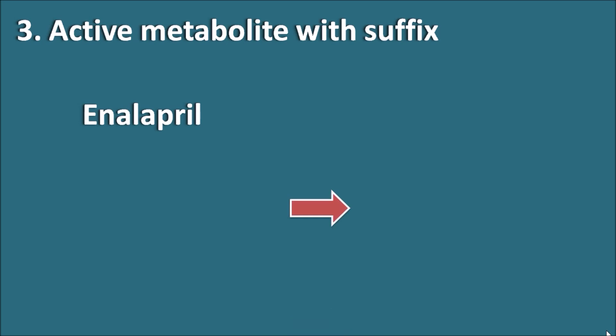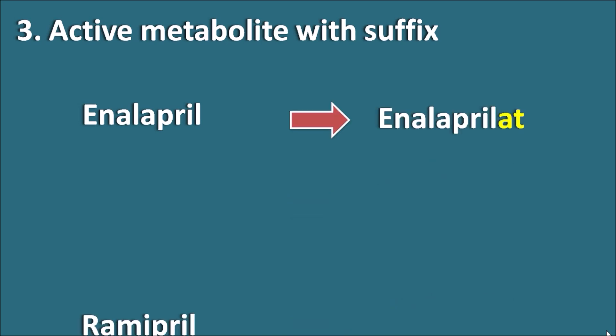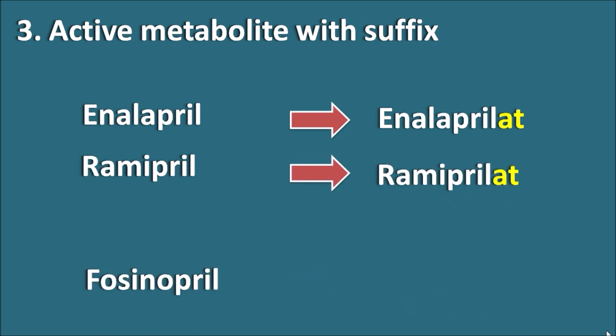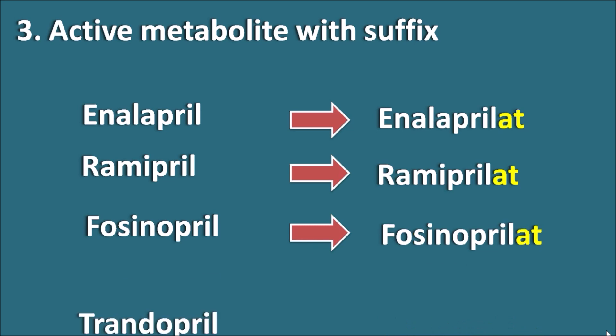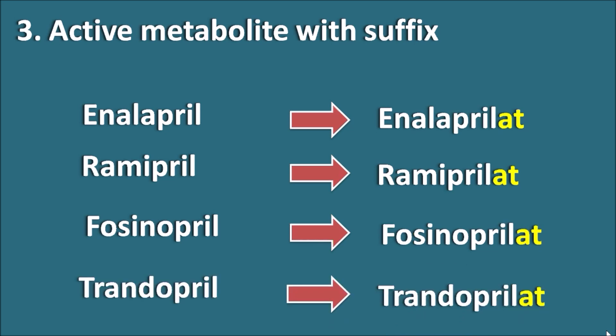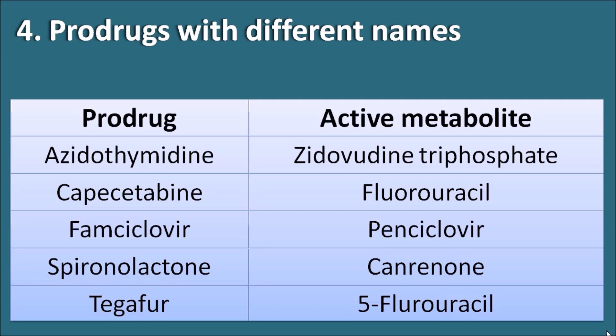Enalapril is a prodrug with active metabolite enalaprilat. Similarly: ramipril/ramiprilat, fosinopril/fosinoprilat, and trandolapril/trandolaprilat. All of these are ACE inhibitors and are prodrugs converted into active metabolites indicated by the suffix '-at'. You should note that two ACE inhibitors — captopril and lisinopril — are active drugs, but all the remaining ACE inhibitors listed are prodrugs whose active metabolites are named by adding the suffix '-at'.